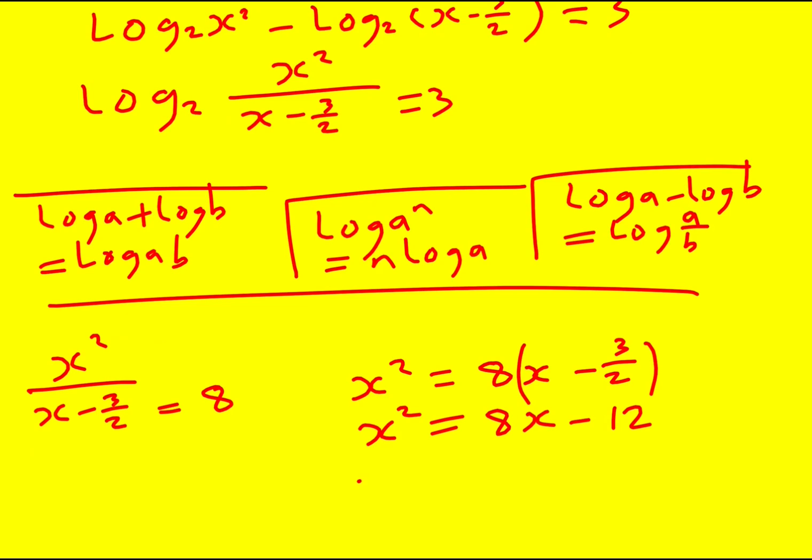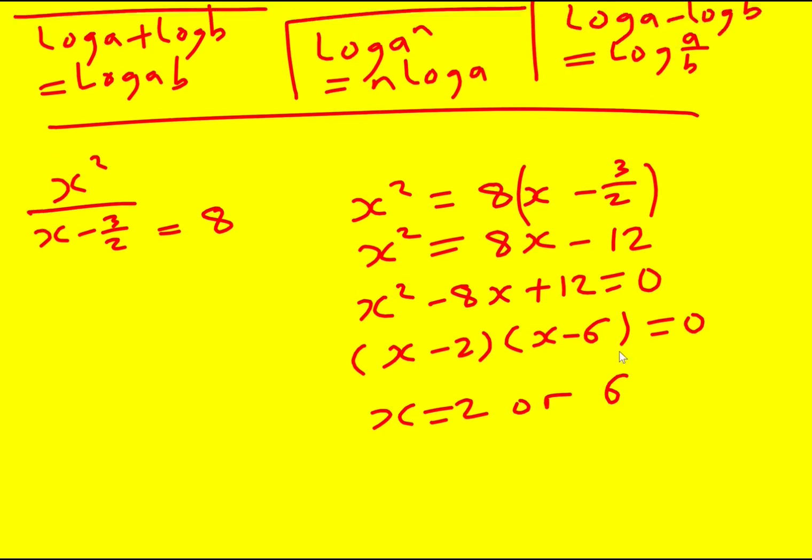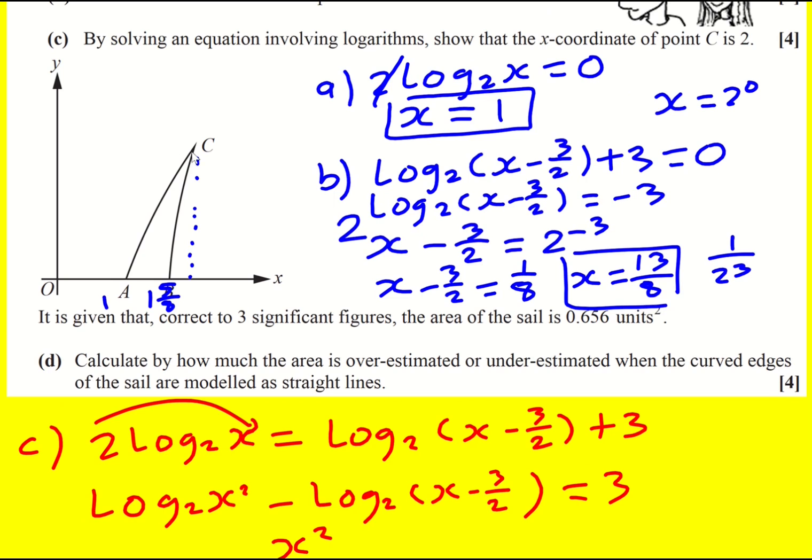We've got a quadratic. x² - 8x + 12 = 0. So x equals 2 or 6. We've actually got two solutions where they meet, but that's because these two functions have essentially been restricted—they would carry on, but we're only going up to this point C where they first meet.